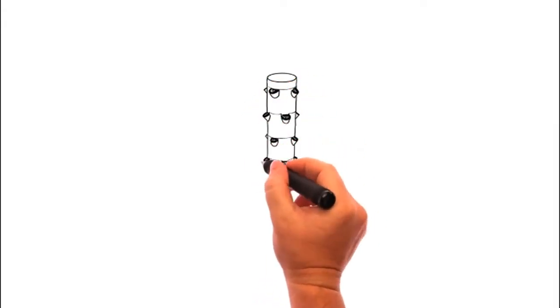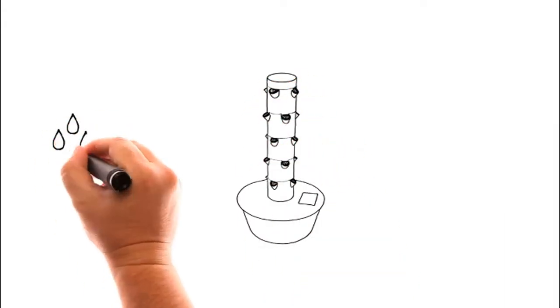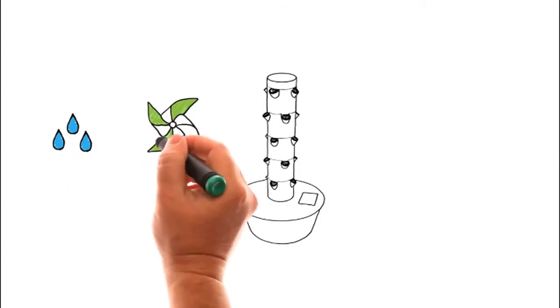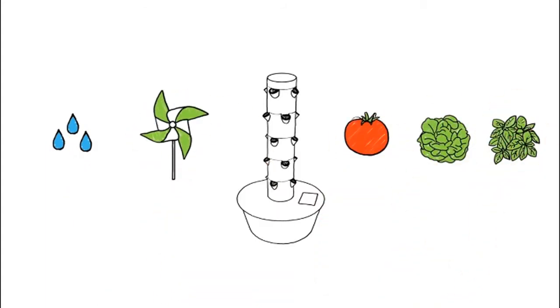Tower Garden's state-of-the-art Aeroponic Vertical Garden System uses both water and air to produce more colorful, better tasting, and incredibly nutritious fruits, vegetables, and herbs.